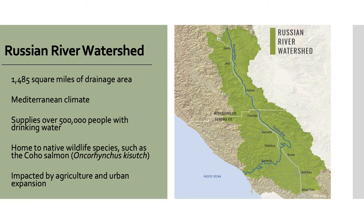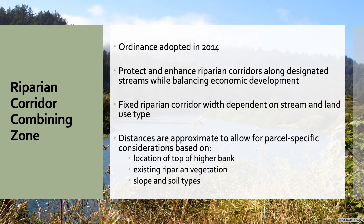The main threats to riparian habitat throughout the watershed and Sonoma County are agriculture and urban development. The Riparian Corridor Combining Zone is an ordinance in Sonoma County adopted in 2014 and regulated by the Sonoma County Permit and Resource Management Department. Its objective is to protect and enhance riparian corridors along designated streams while balancing economic development. This ordinance regulates a fixed width distance that prohibits land use activities within these conservation areas, with distances determined based on stream and land use type, and approximate to allow for parcel-specific considerations based on top of higher bank, existing riparian vegetation, and slope and soil types.